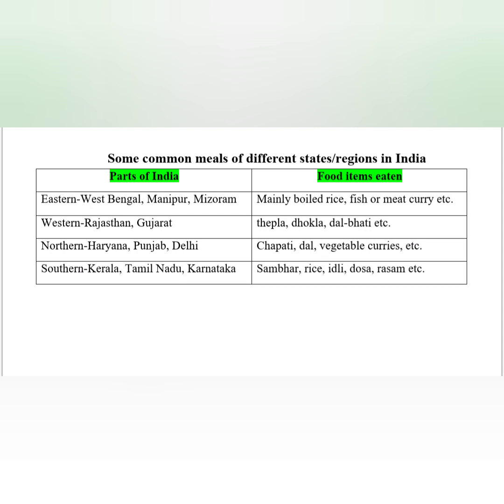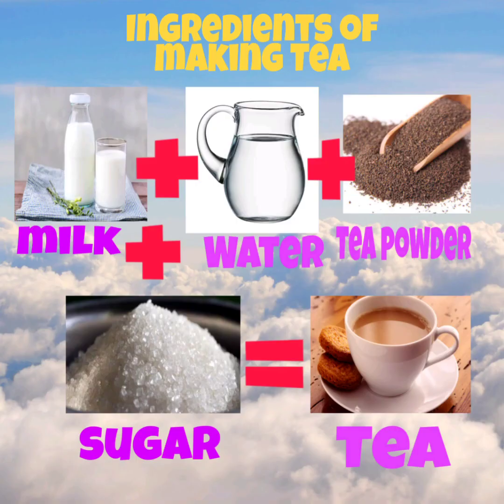The next topic we are covering is: what is our food made of? Our food is prepared with the help of different materials. Suppose your mother is making tea — have you noticed how she makes it? She uses milk, water, tea powder, and sugar. All these materials she uses for making tea.